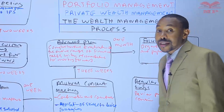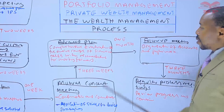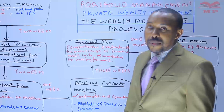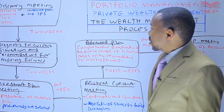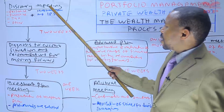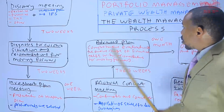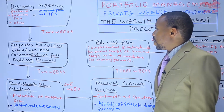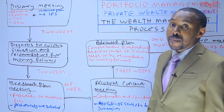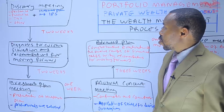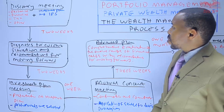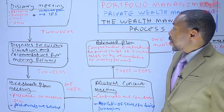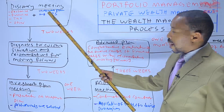We are going to discuss about the wealth management process. I thought it fit to include it in the form of a diagram — not a process diagram — and that begins by discussing about the discovery meeting. In the first lesson to private wealth management, the introduction, I had walked you through the information that needs to be collected so that you can manage funds on behalf of private clients. And that's what we're discussing right over here: the discovery meeting.